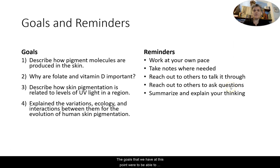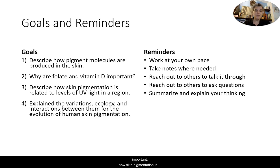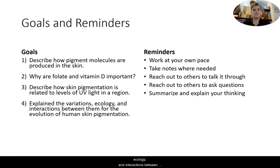The goals that we have at this point are to be able to describe how pigment molecules are produced in the skin, why folate and vitamin D are important, how skin pigmentation is related to levels of UV light in a region, and then to explain the variations, ecology, and interactions between them for the evolution of human skin pigmentation.